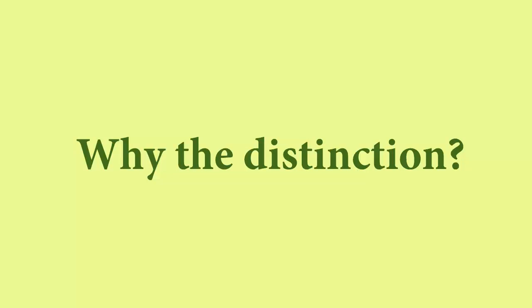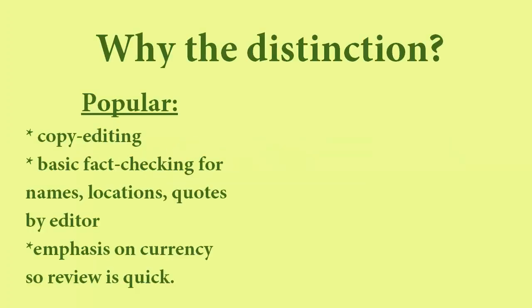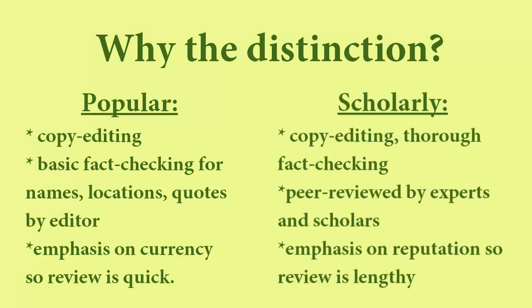The reason that the distinction is made between the two is due to the amount of verification each goes through before they are published. Scholarly publishers have more thorough methods, like peer review, that they put the article through before they publish it, than popular sources do.